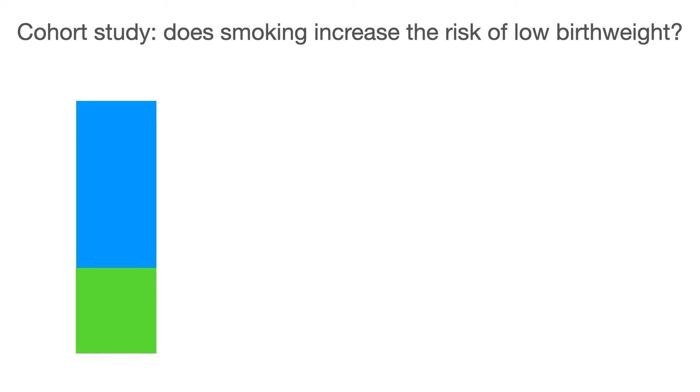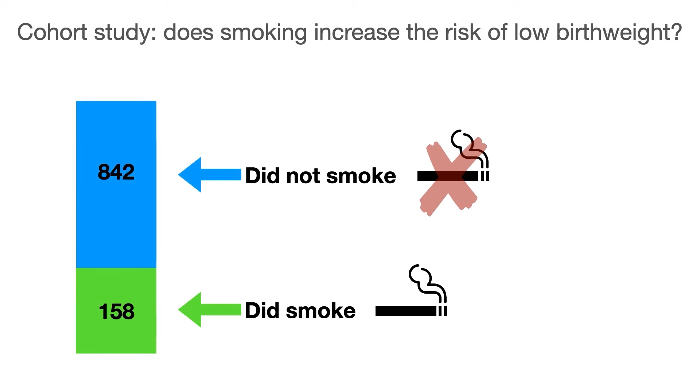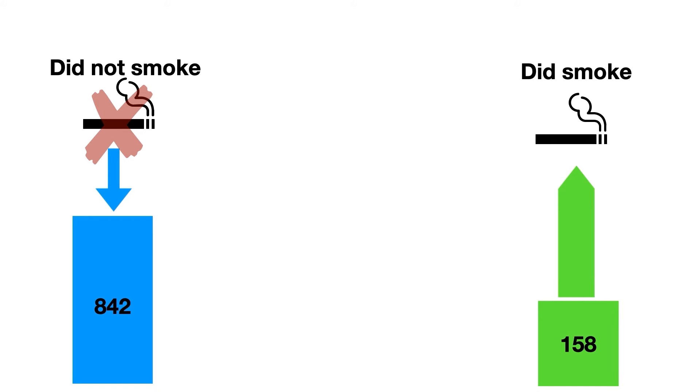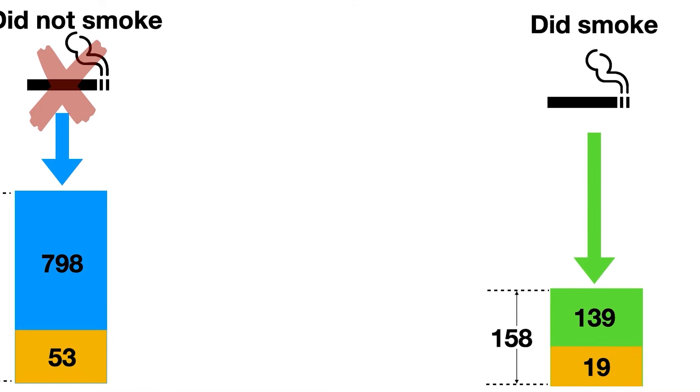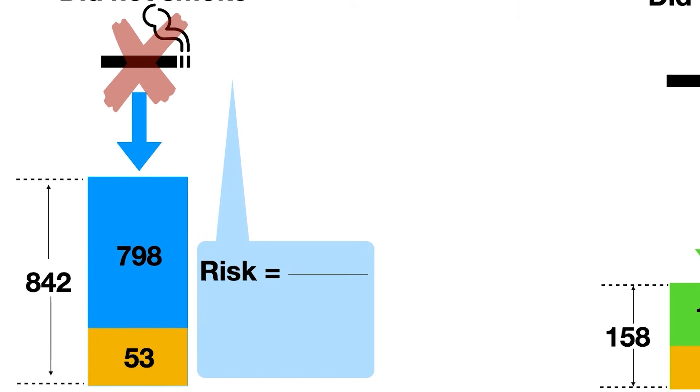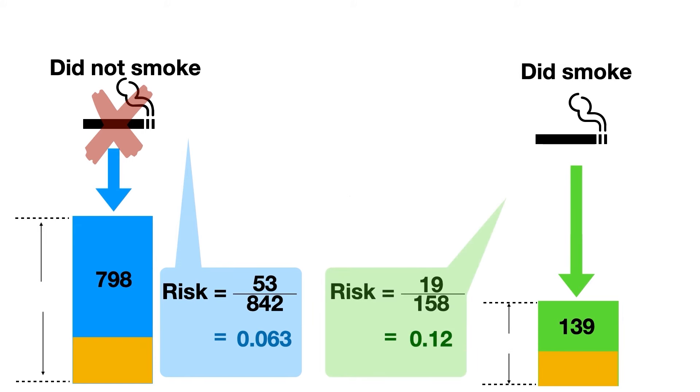In this study we followed up a thousand pregnant women and of the thousand we had 158 who smoked during pregnancy and 842 who didn't smoke, who were non-smokers. So let's consider the risk in each of these two groups separately. In the group of non-smokers 53 babies were low birth weight and 798 were of normal weight and in the group of smokers 19 babies were of low birth weight and 139 were normal weight. Now to calculate the risk we consider the number that had a particular outcome divided by everybody in that group. So the risk of low birth weight babies amongst non-smokers was 0.063, that's about six percent. And similarly the risk of low birth weight babies amongst smokers was 0.12, about 12 percent.